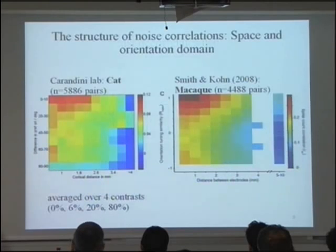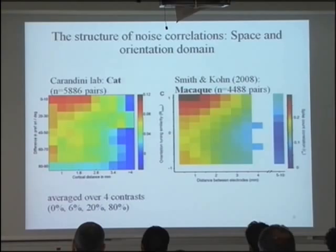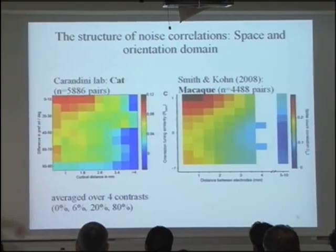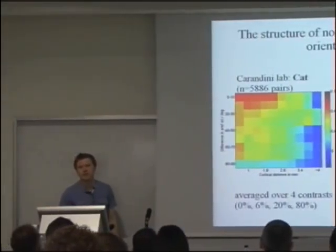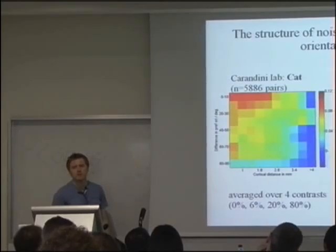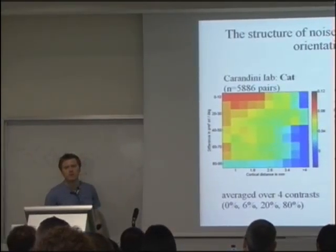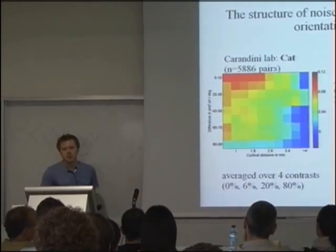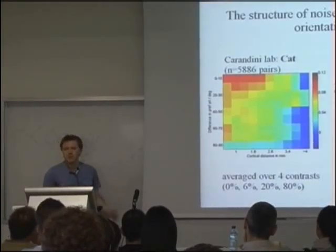The zero-distance bin is the same electrode. The next biggest distance would be 400 microns. The first bin is dominated by 400 micron pairs, though sometimes two units are obtained from the same electrode. The stimulus is a full-screen grating, so it activates all neurons and there are no receptive field issues.